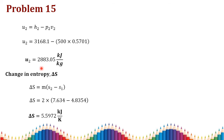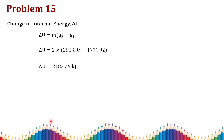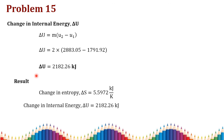Change in entropy: ΔS equals mass times (s2 minus s1), with mass equals 2 kg, giving ΔS equals 5.5972 kJ/K. Change in internal energy: ΔU equals mass times (u2 minus u1), giving ΔU equals 2182.26 kJ. As a result, ΔS equals 5.5972 kJ/K and ΔU equals 2182.26 kJ.